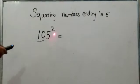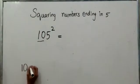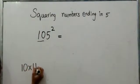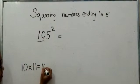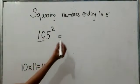The number before 5 is 10. One more than 10 is 11. 10 times 11 is 110. Write 110 over here.